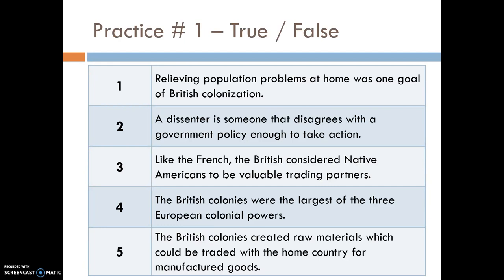Practice number one. Put a heading in your notes and mark the following statements true or false. One: relieving population problems at home was one goal of British colonization. Two: a dissenter is someone that disagrees with a government policy enough to take action. Three: like the French, the British considered Native Americans to be valuable trading partners. Four: the British colonies were the largest of the three European colonial powers. Five: the British colonies created raw materials which could be traded with the home country for manufactured goods. Pause the video to answer.